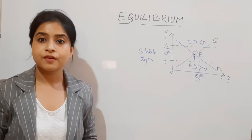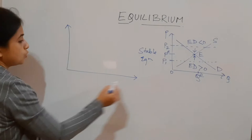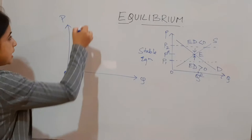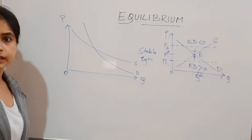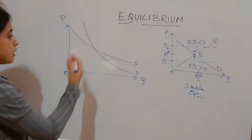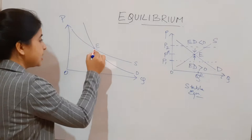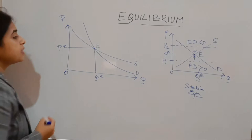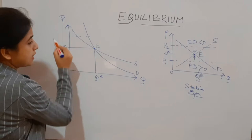Now let's talk about the situation when equilibrium is not stable, with the help of a diagram. Here Q and P are measured on the axes. This is my demand curve and this is my supply curve — the supply curve and the demand curve intersecting at point E, with equilibrium quantity Qe and equilibrium price Pe. Now look at a particular part of this diagram — this is my demand curve and this is my supply curve.